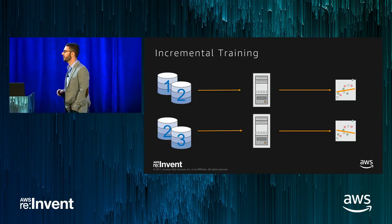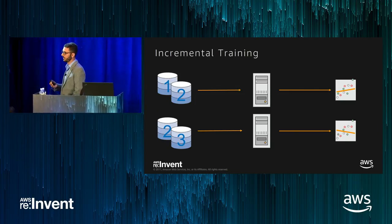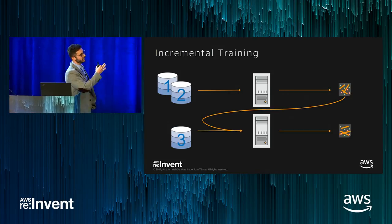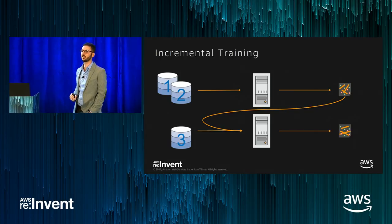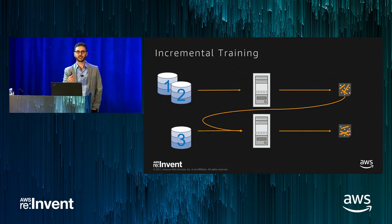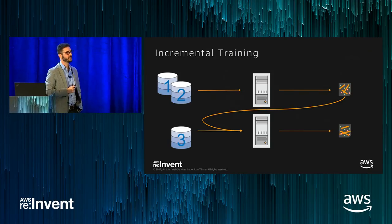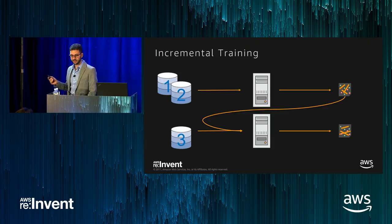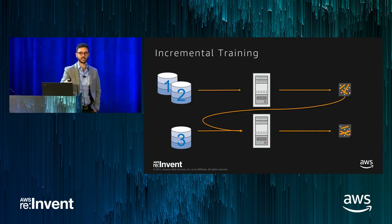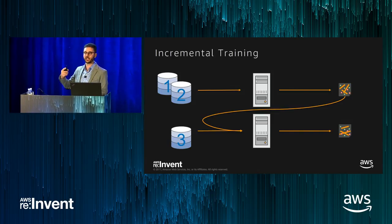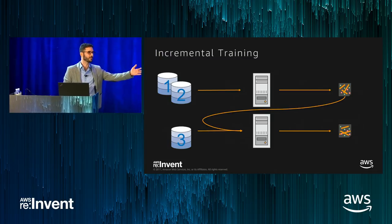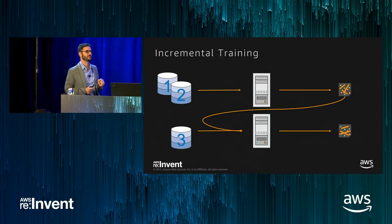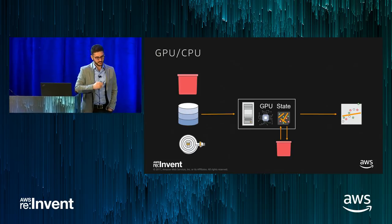The next advantage is incremental training. If you train on days one and two, when you're done you just persist — serialize — the state. When you get data for day three, deserialize the state, restart the machine exactly where it was, and process day three. You save compute because you don't have to retrain on day two. There's another advantage: your model now incorporates days one, two, and three — you don't have to choose how far back you go. It's faster, cheaper, and more accurate.